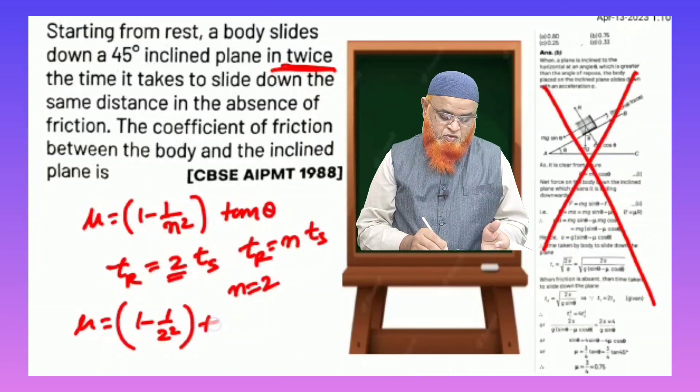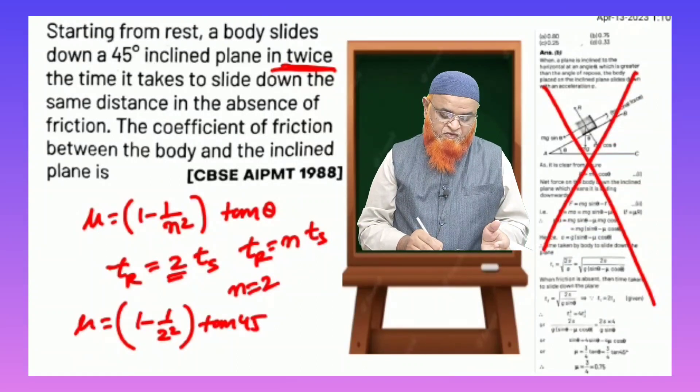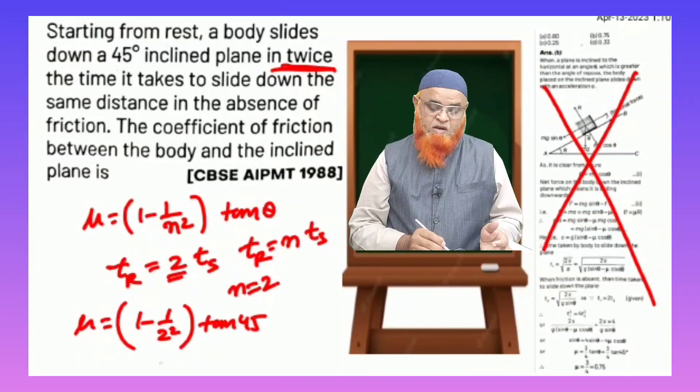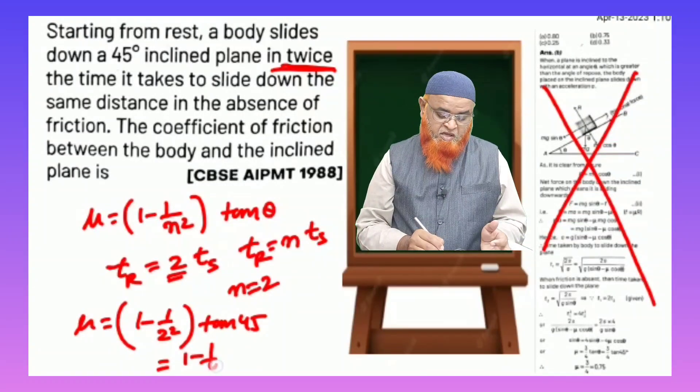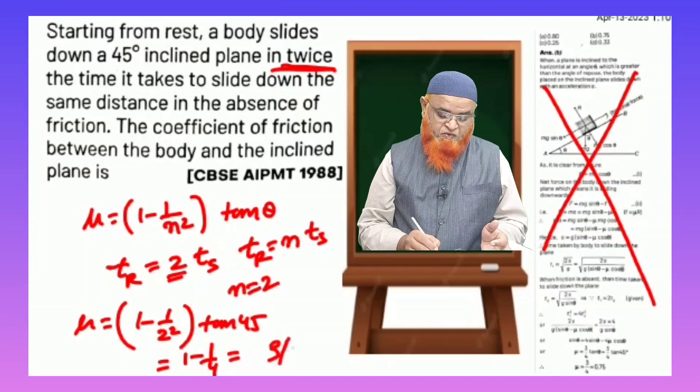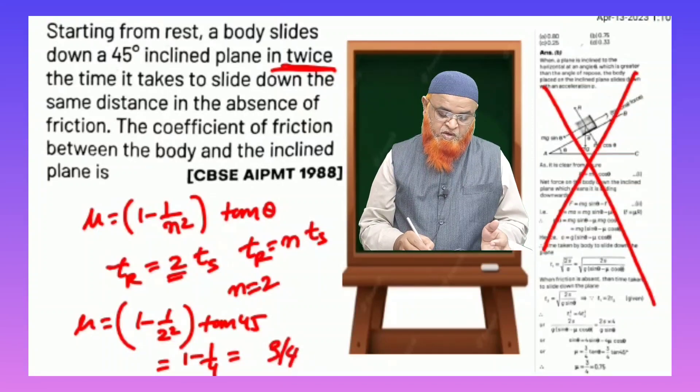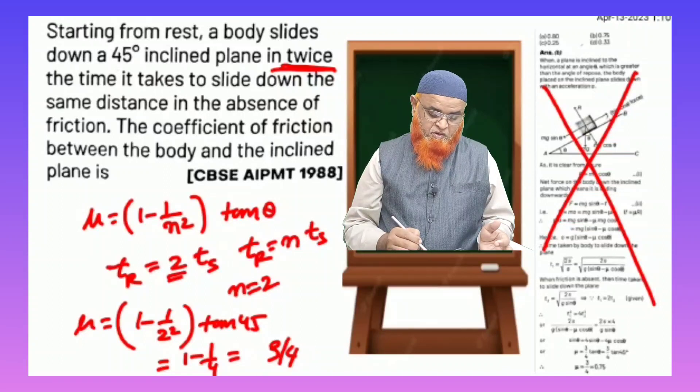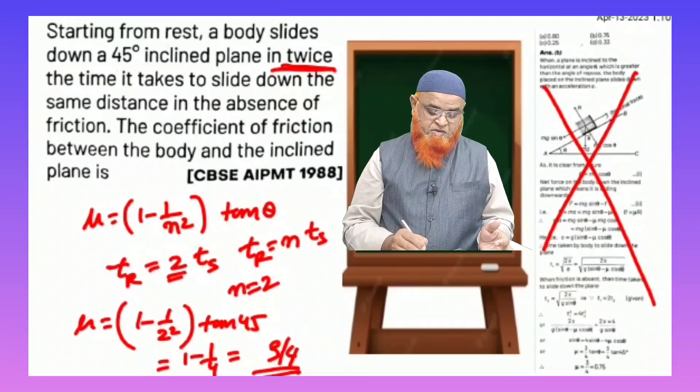μ is equal to 1 minus 1 by 2 square into tan 45°. Tan 45 is going to be 1. 1 minus 2 square is going to be 1 minus 1 by 4. That is 3 by 4 is going to be your answer. This is a wonderful 3 by 4.